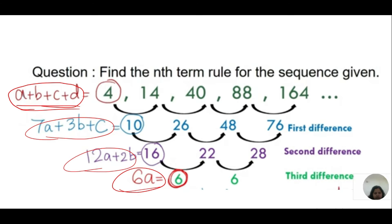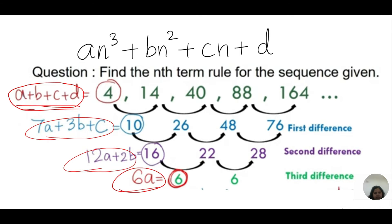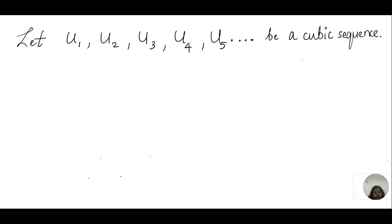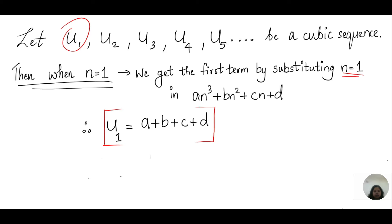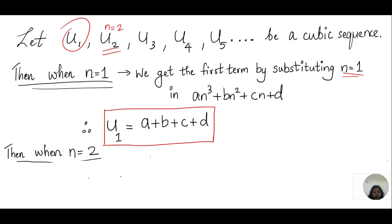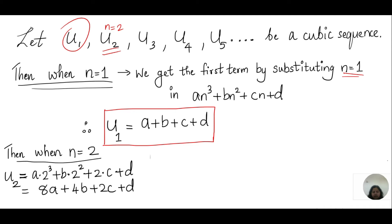The proof begins with the general form of a cubic sequence: an³ plus bn² plus cn plus t. Let us assume that u1, u2, u3, u4, and u5 are the terms of a cubic sequence. When n equals 1, we find the first term by substituting into the general formula, giving u1 equals a plus b plus c plus t. For the second term, when n equals 2, substituting gives u2 equals 8a plus 4b plus 2c plus t.